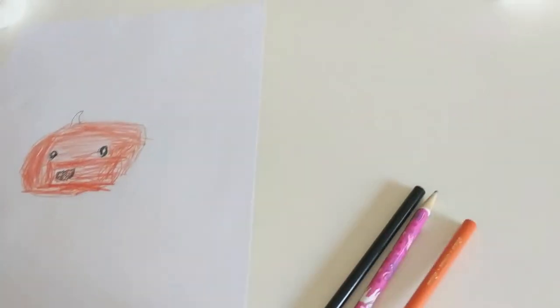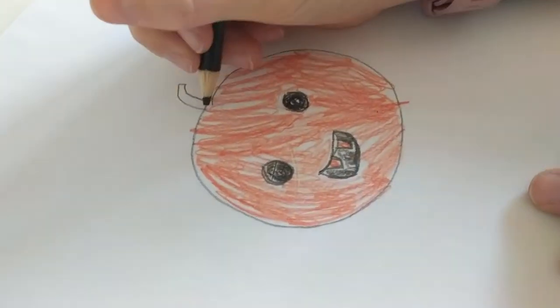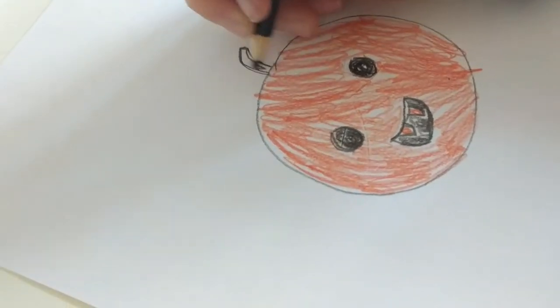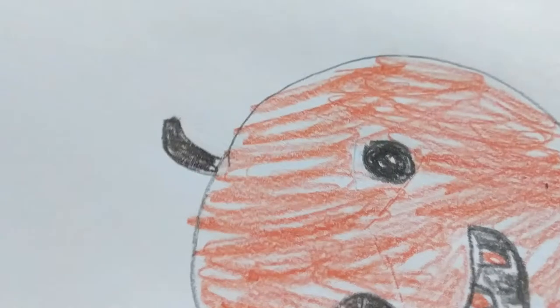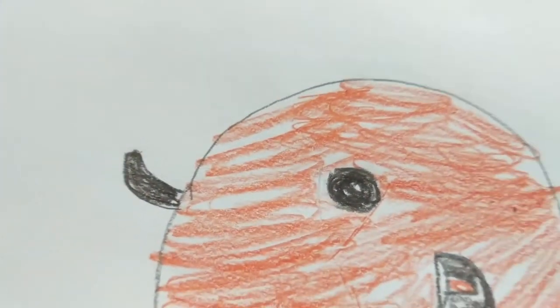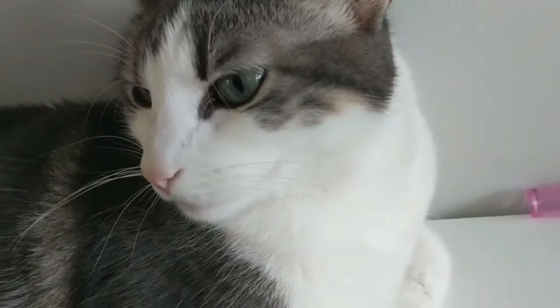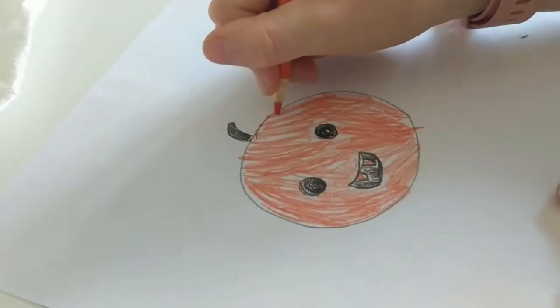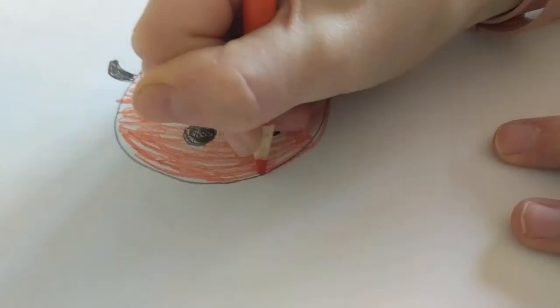Great, so now take your black and you're going to outline the stem and then fill that stem in like that. Alrighty. Now you're going to take your orange again and you're going to outline the pumpkin and try to make the pencil line not visible.